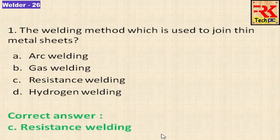For resistance welding, you can use spot, seam, projection, or flash methods. If you want to use arc welding, you can increase penetration power, so resistance welding is preferred for thin metal sheets.